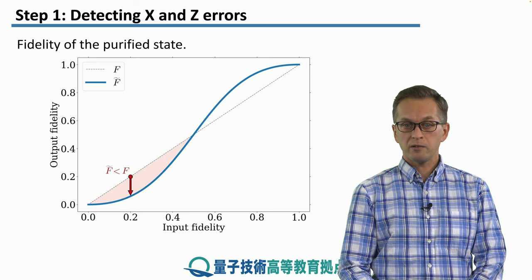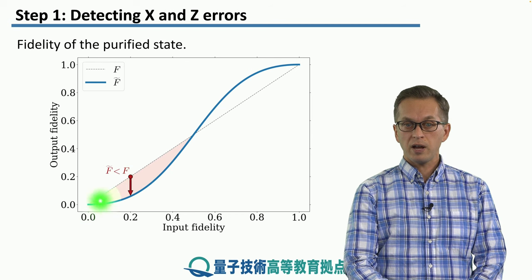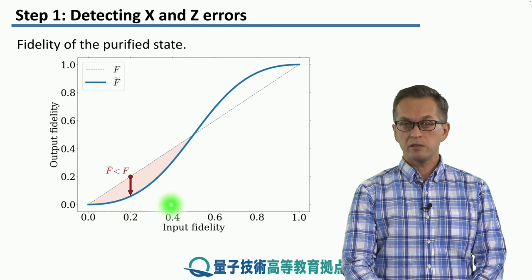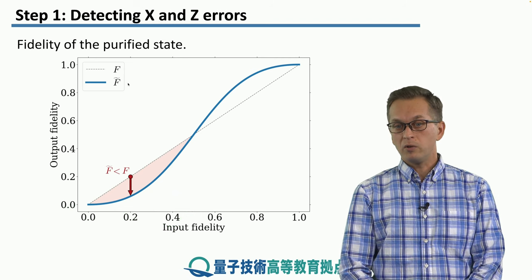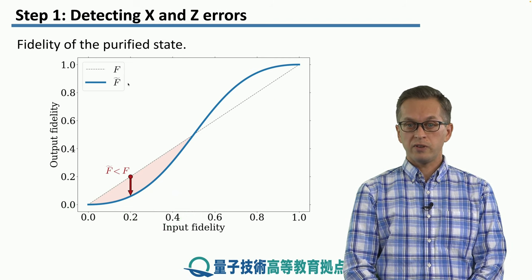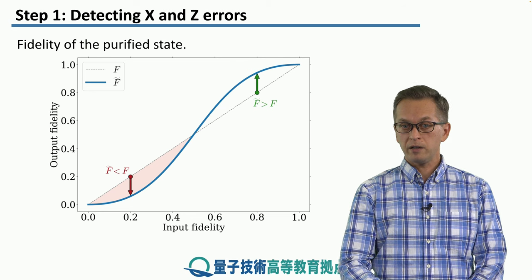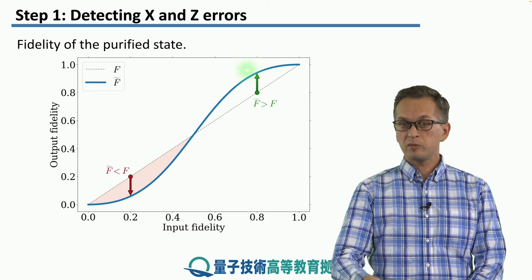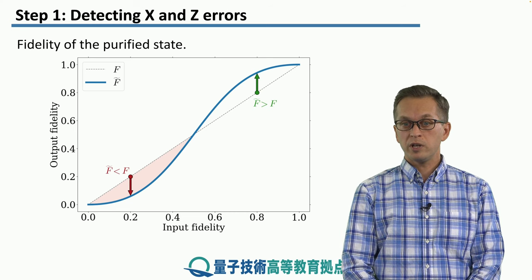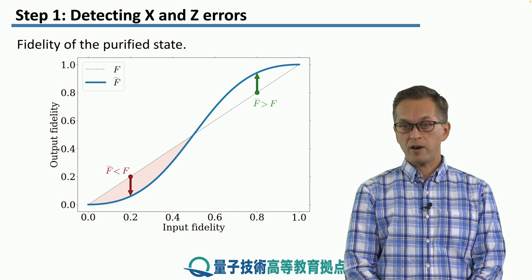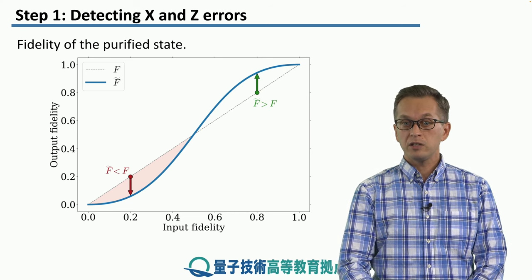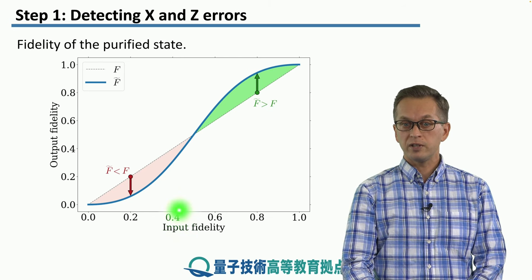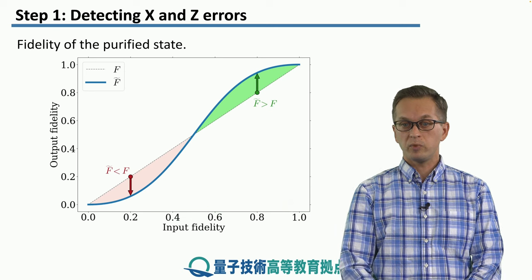And if you look at the graph, you can see that this is true for any input fidelity in this region between 0.0 and 0.5. On the other hand, if your input fidelity is higher, for example 0.8, then we see that the fidelity of the output state is actually boosted. We get closer to our ideal state phi plus. And again, this is true for any state in the region of input fidelity 0.5 and 1.0.